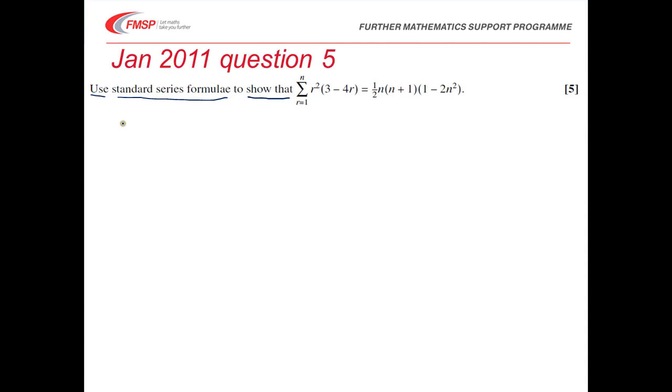So to use standard series formulae, I need to have separate sums. So the first thing I need to do is to multiply out the brackets. So I'm starting by writing the left hand side down and then multiplying out the brackets: 3r squared minus 4r cubed.